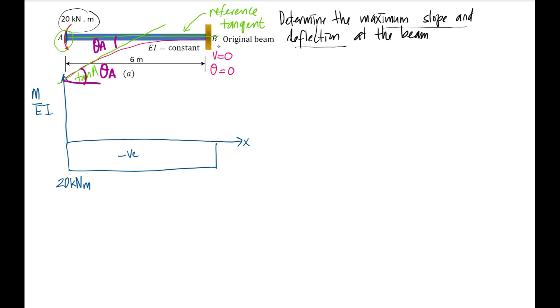the M over EI diagram between A and B. Therefore, we apply theorem number one. We know that θ_A equals the integral from A to B of M over EI dx, which is the area under the graph.